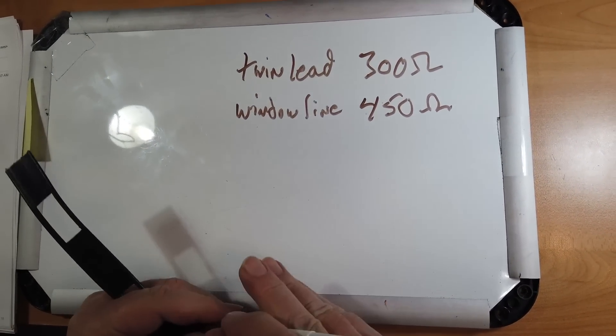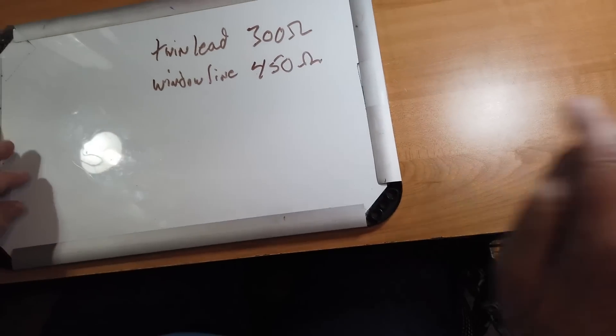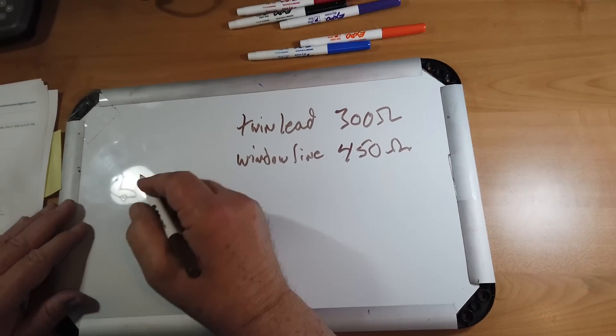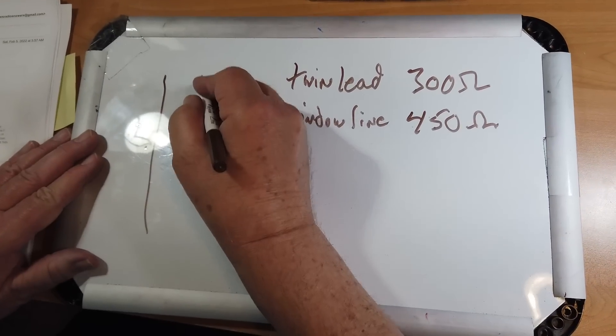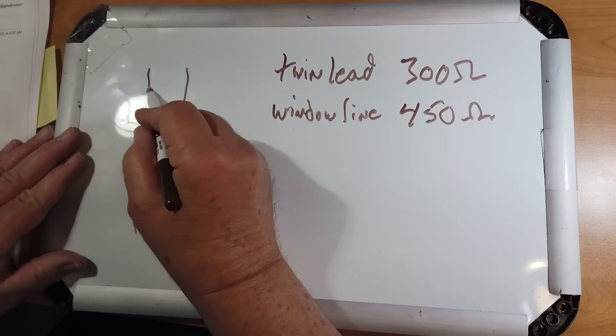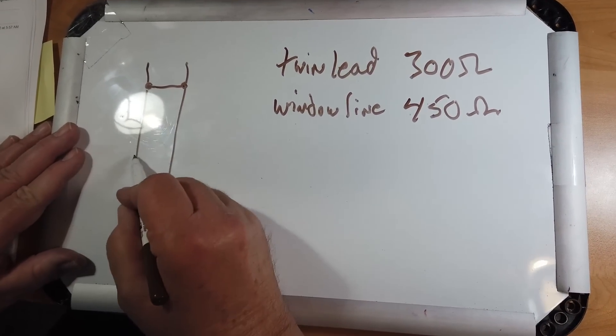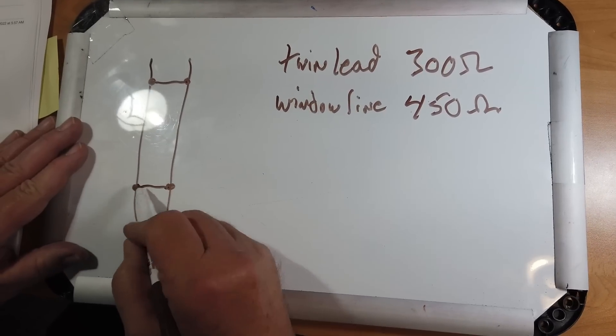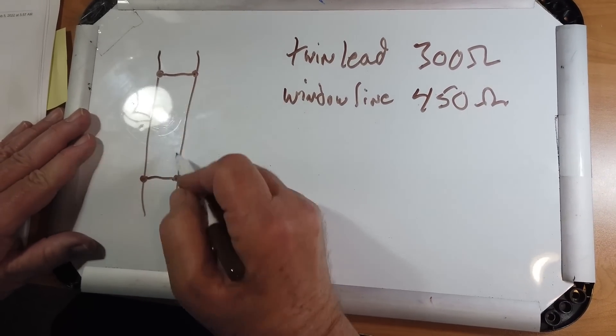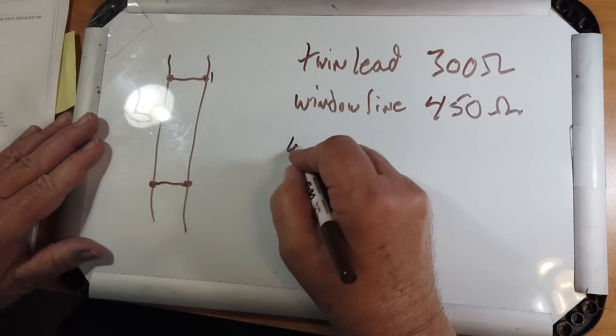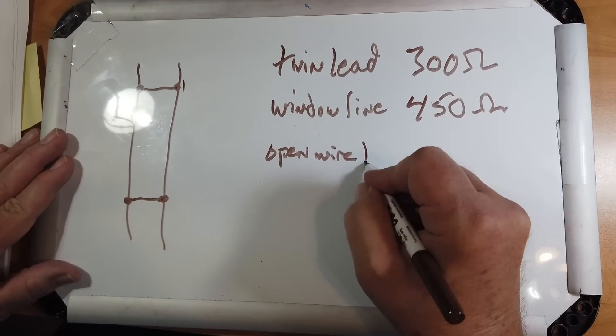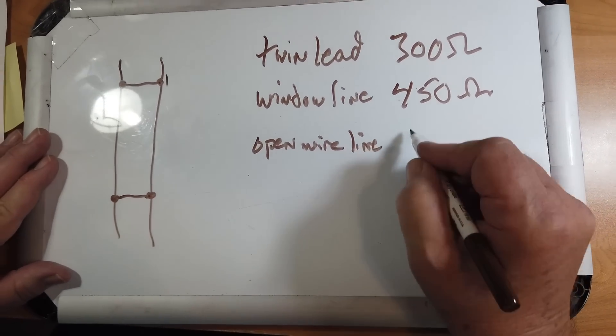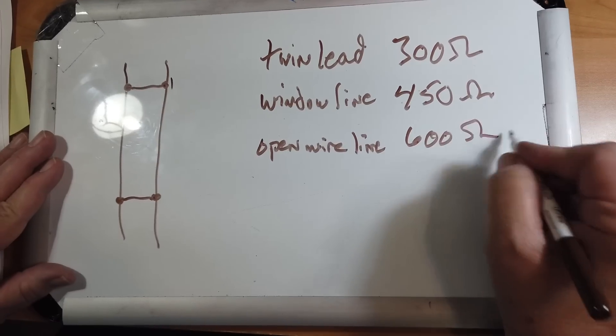You can make open wire line, which I don't have a sample of. It's about like this and has little plastic spacers every foot or so that hold this. These are bare. That is true open wire line, and it has 600 ohms characteristic impedance.